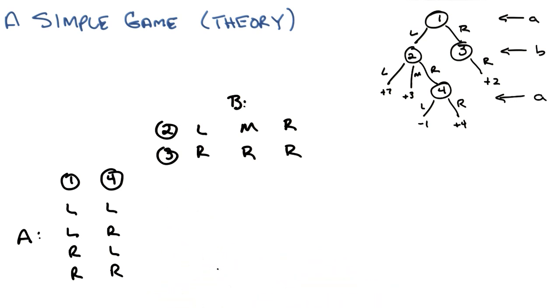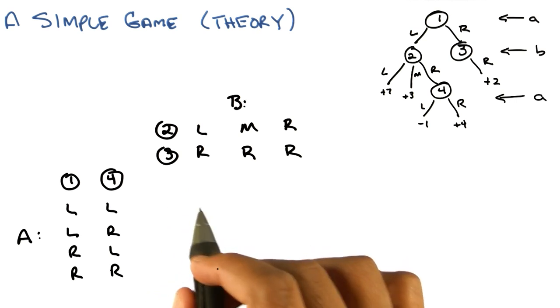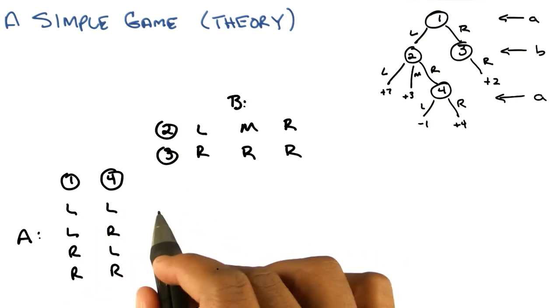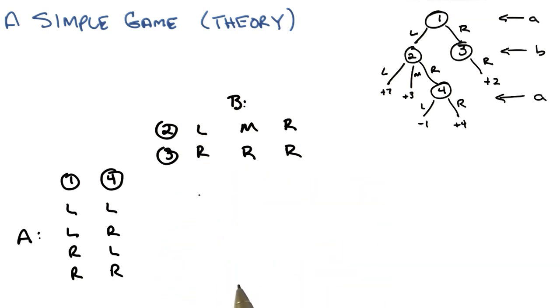And I can put in each of the cells of the matrix, the value of taking a particular strategy from A and a particular strategy from B. Does that make sense? Yeah, that's very clever.